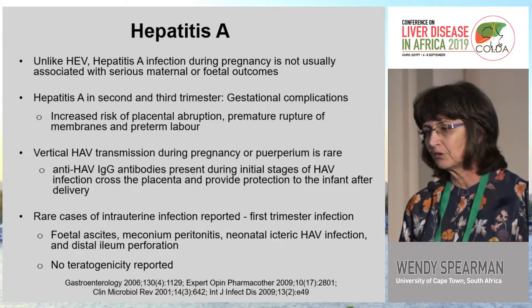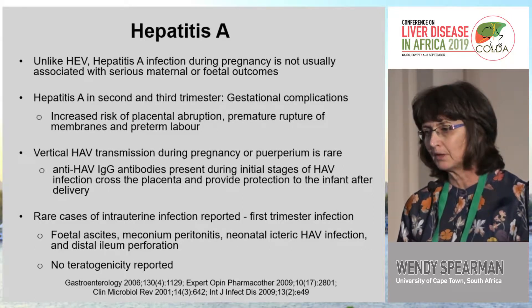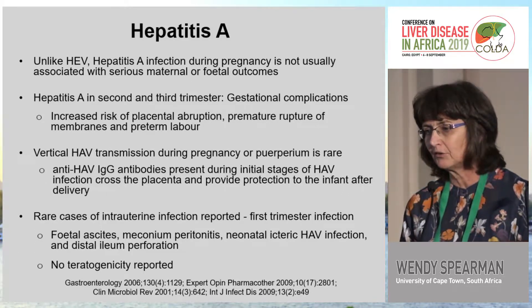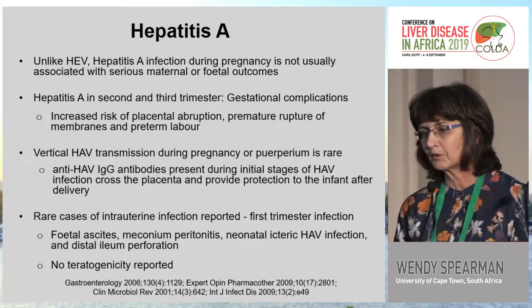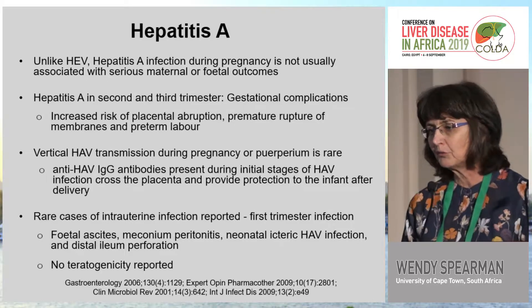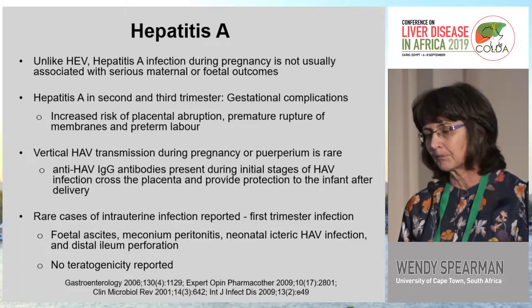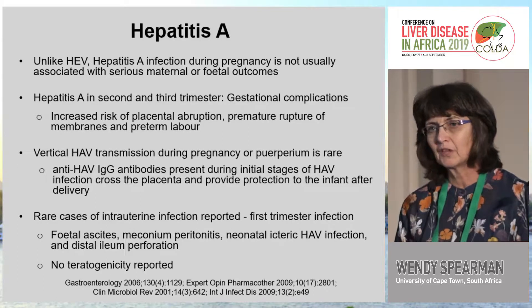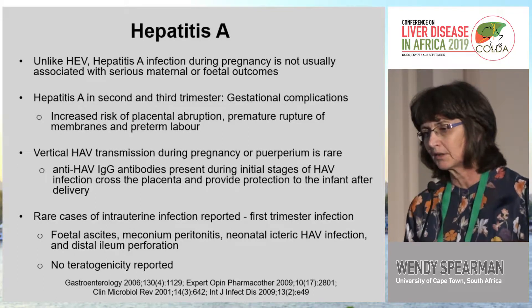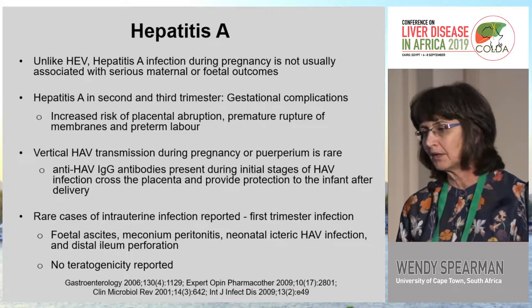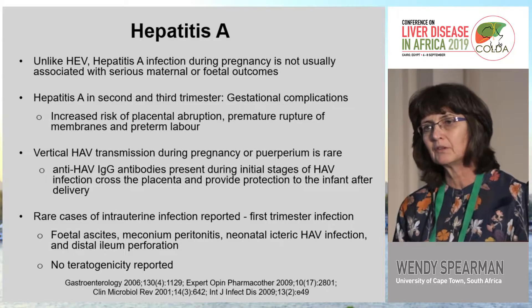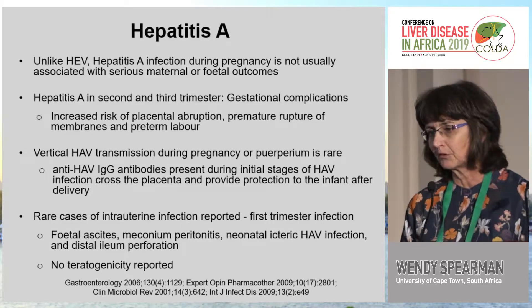In terms of vertical transmission during pregnancy or the puerperium, this is rare, thought to be due to IgG antibodies which cross the placenta and provide protection to the infant after delivery. Rare cases of intrauterine infection have been reported, particularly if acquired in the first trimester, with significant poor outcomes including fetal ascites, meconium peritonitis, and jaundice in the neonate. Distal ileal perforations have also been described, but there is no teratogenicity reported.